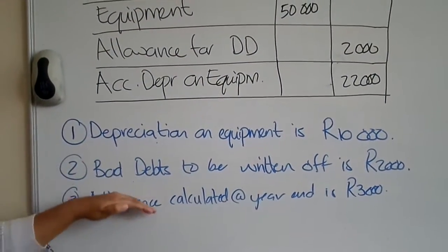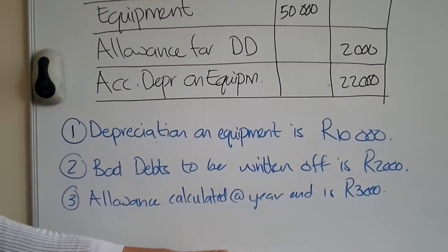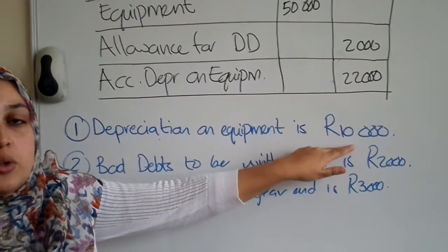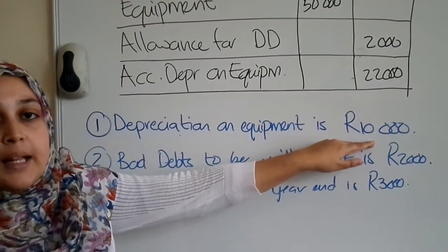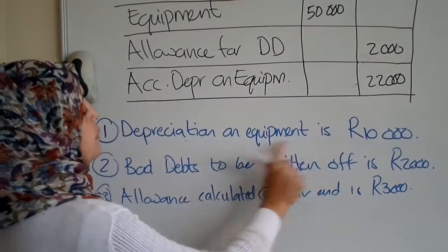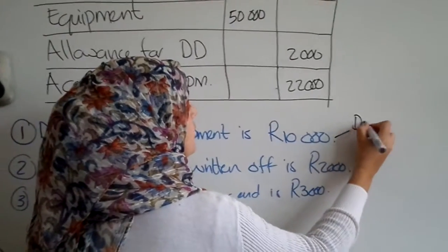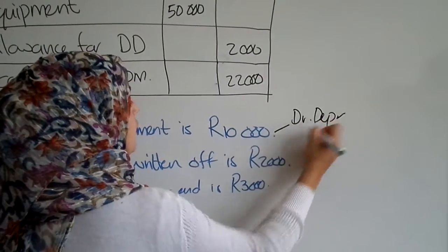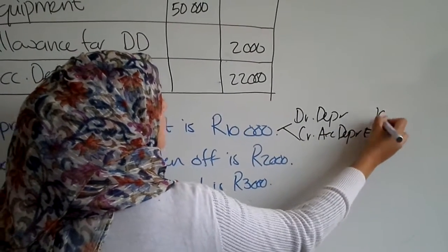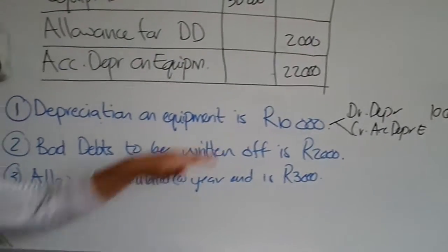There are no calculations here — I've just given it to you as is because the aim of the video is just to show you how to draw up financial statements. By number one I said depreciation on equipment is 10,000 Rand. You would normally have to go and calculate depreciation, but I've given it to you in this example. So if you calculate depreciation and get to 10,000 Rand, your journal entry is: debit depreciation, credit accumulated depreciation on equipment, and the amount is 10,000. That would have been your journal entry for transaction one.